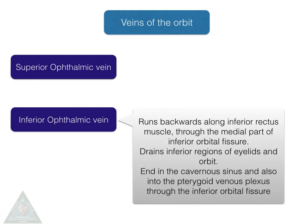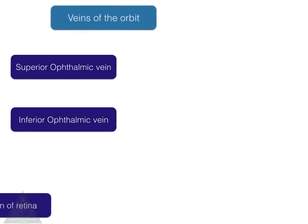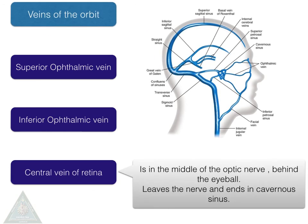The inferior ophthalmic vein runs along the inferior rectus muscle through the medial part of the inferior orbital fissure, drains the inferior regions of the eyelids and orbit, and ends in the cavernous sinus. It also has communication with the venous plexus through the inferior orbital fissure. The central vein of the retina lies in the middle of the optic nerve behind the eyeball, leaves the nerve, and ends in the cavernous sinus independently.